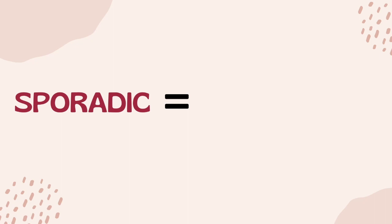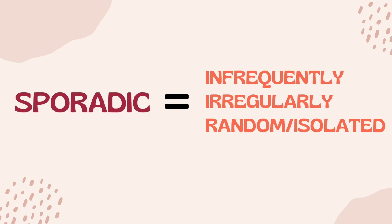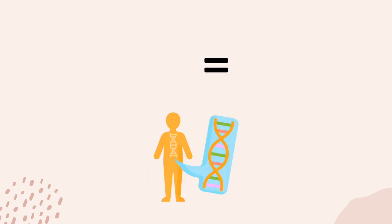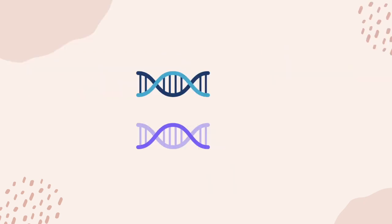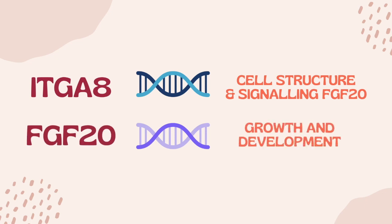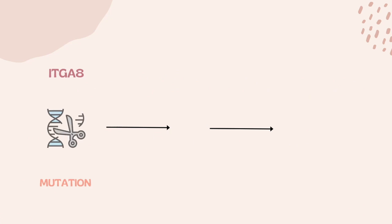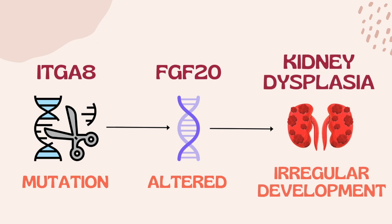First, we will be talking about the genetics behind kidney dysplasia. Most of the cases of kidney dysplasia are sporadic, meaning the disease occurs infrequently and irregularly in a random or isolated manner as a result of genetic mutations — known as a spontaneous genetic mutation, which is the permanent alteration in the DNA sequence that makes up a gene. The gene affected in kidney dysplasia is gene ITGA8. This gene is key to cell structure and signaling of gene FGF20, which is responsible for growth and development of the kidney. When there is a mutation in gene ITGA8, signaling to gene FGF20 is altered and therefore slows kidney development, leading to irregular development of the kidneys.